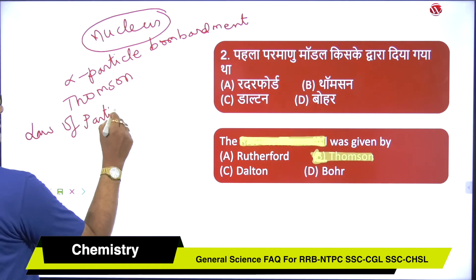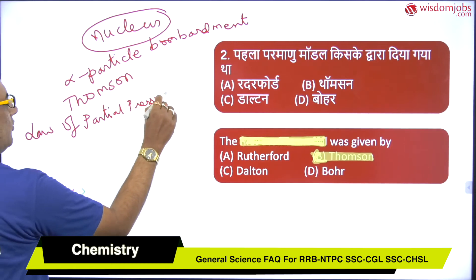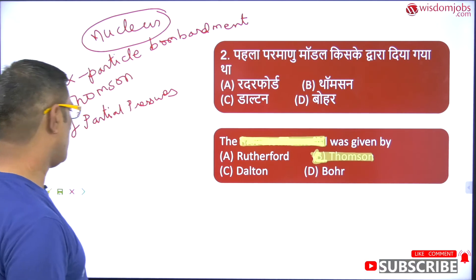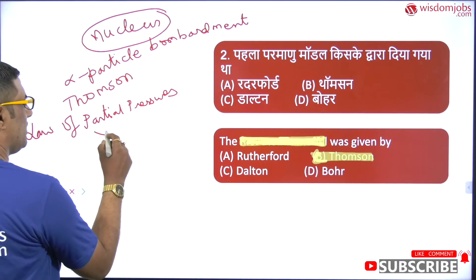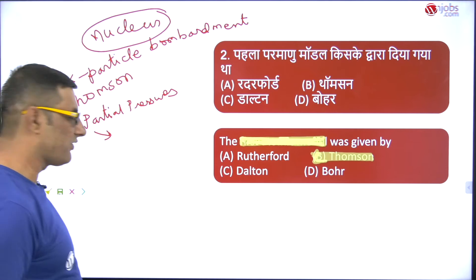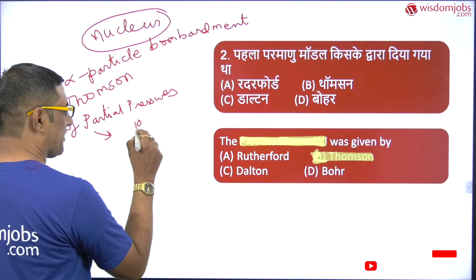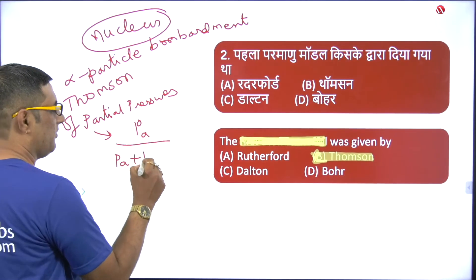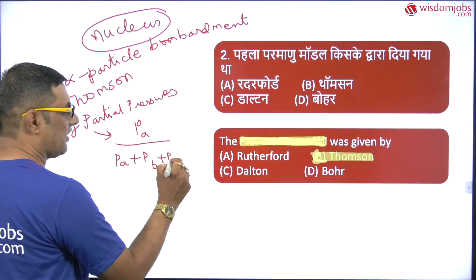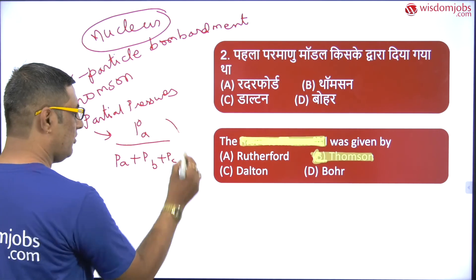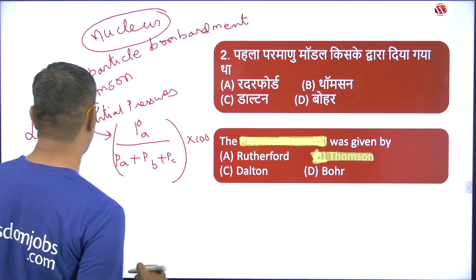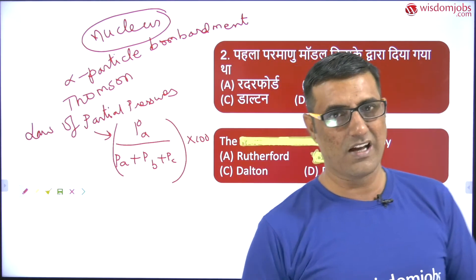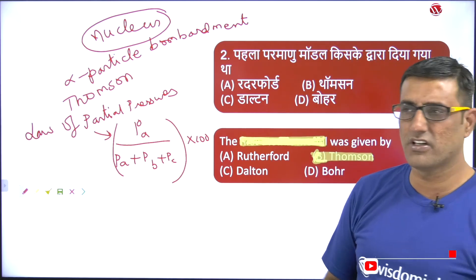Dalton proposed the law of partial pressures, so he is in no way concerned with the first atomic model. Dalton's law states that the partial pressure of a gas in a mixture is given by the pressure of that particular gas — P_A divided by (P_A + P_B + P_C), multiplied by 100. This is useful in determining the mole fraction of a particular gas in a gaseous mixture.